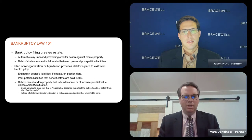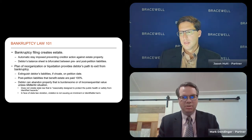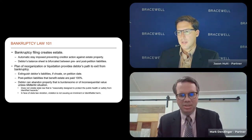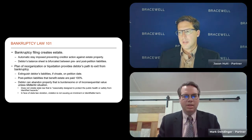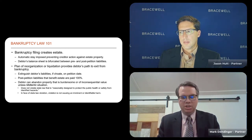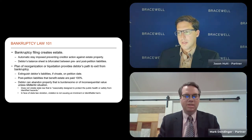The automatic stay prevents creditors from taking action against the debtor and against the debtor's property — that is, property of the debtor's bankruptcy estate. The other significant thing to understand with regard to the filing of the petition for bankruptcy is it takes the debtor's balance sheet and splits it in two. It bifurcates it between pre-petition liabilities and post-petition liabilities. Once the debtor's in bankruptcy, it generally operates its business in the ordinary course.